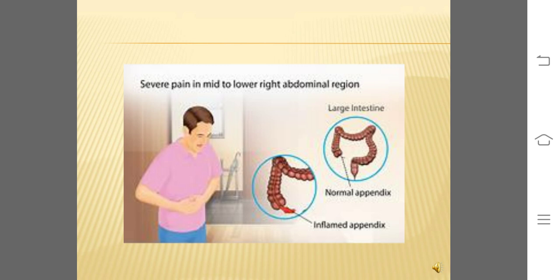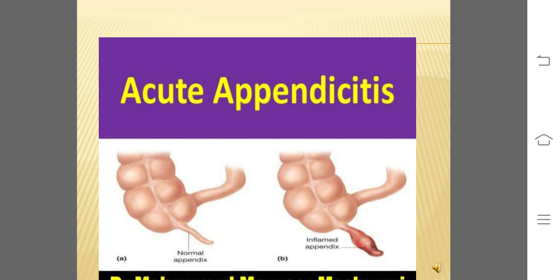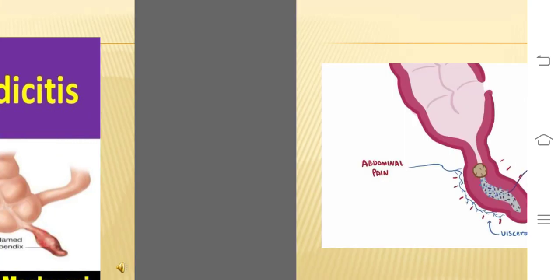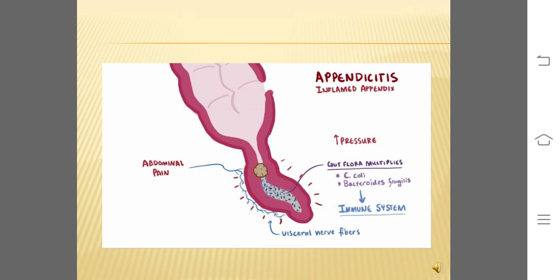In this picture, we can see a man suffering from severe pain in the mid to lower right abdominal region. Acute appendicitis has an inflamed appendix as compared to normal. We can see the appendix with inflammation, increase in size and mass, and it is also reddish because of rich blood supply. In this diagrammatic representation of the inflamed appendix, abdominal pain is due to visceral nerve fibers, and gut flora already present in the appendix also multiplies and causes stimulation of the immune system.